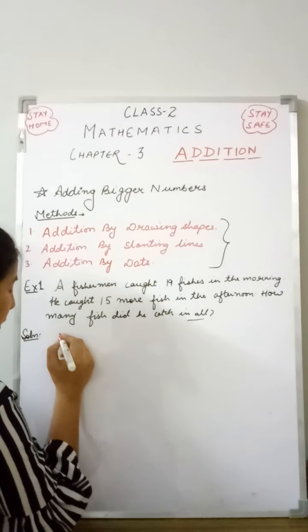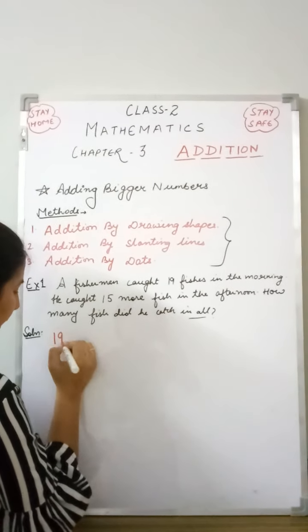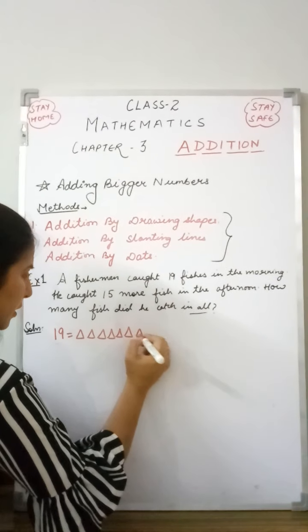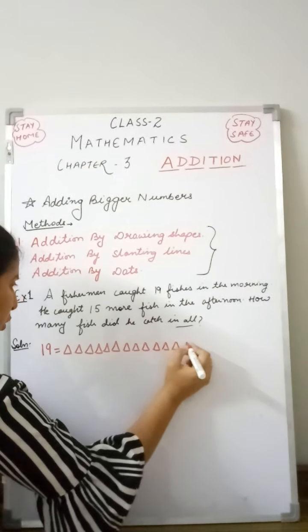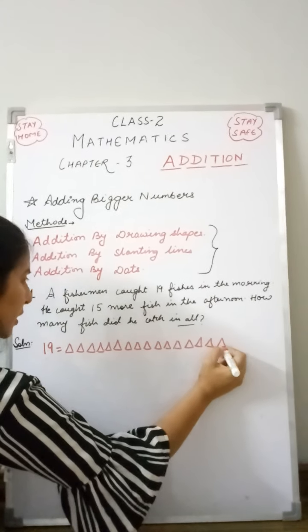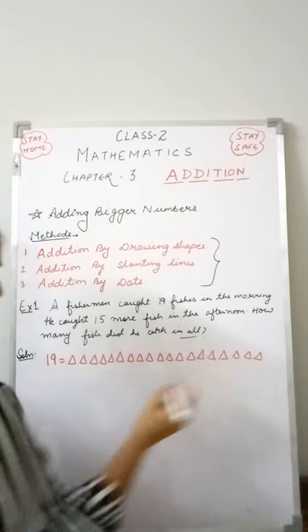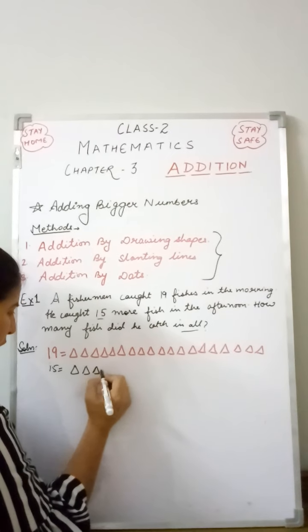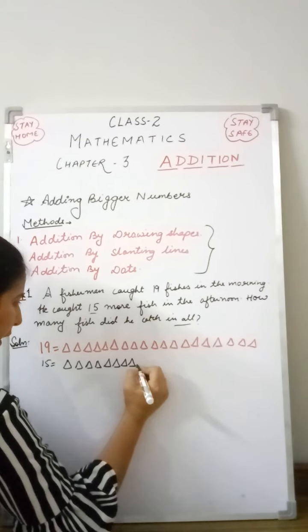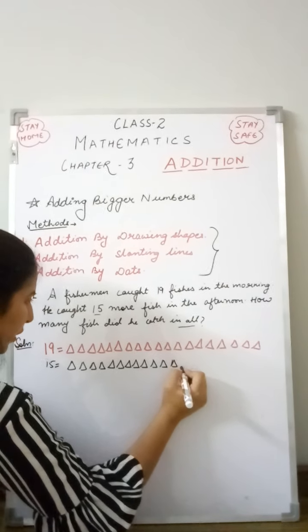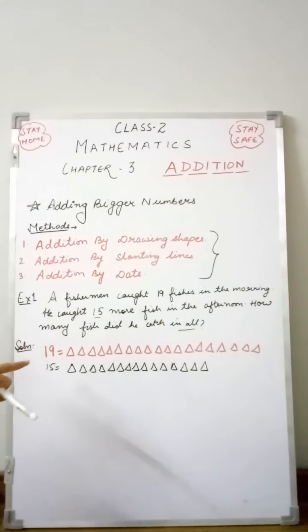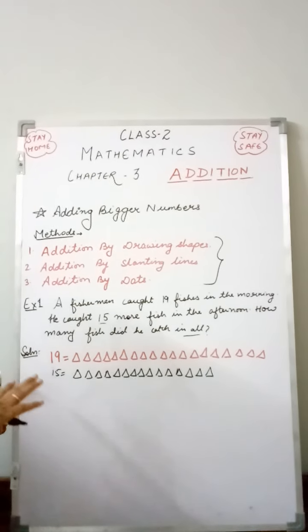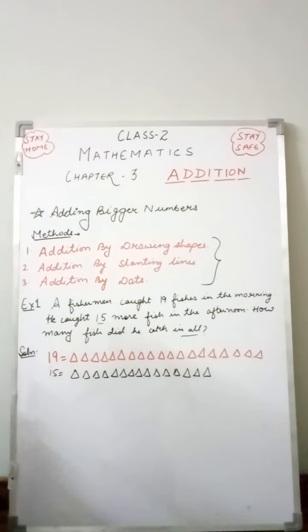Here, 19 is the first number. To represent 19, let's draw triangles — counting 1 through 19. Now for the next number, 15 more fish in the afternoon, we draw 15 more triangles — counting 1 through 15. You can use any shape, and also a different color to represent each number. I have chosen red for 19 and black for 15.